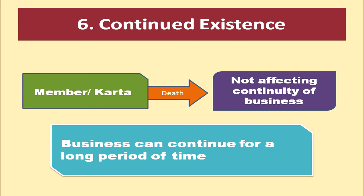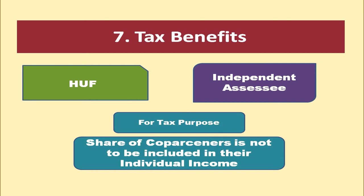Continued existence is a merit of Joint Hindu Family business — a member's death or Karta's death will not affect continuity, because if Karta dies, the eldest family member takes over and the business continues for a long period of time. Regarding tax benefits, the Hindu undivided family business is an independent assessee for tax purposes, and the share of co-parceners is not to be included in their individual income for tax purposes.